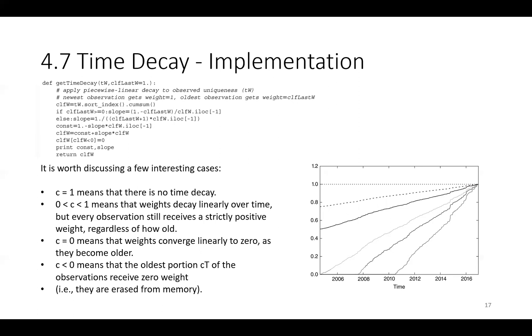When c is equal to 0, this means that weights converge linearly to 0 as they become older. And when c is smaller than 0, it means that the oldest proportion c_t of the observations receive 0 weight. In other words, they are erased from the memory.